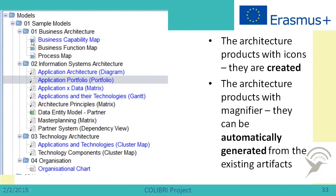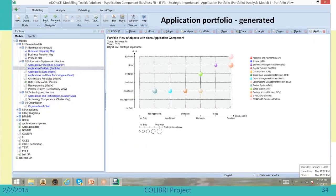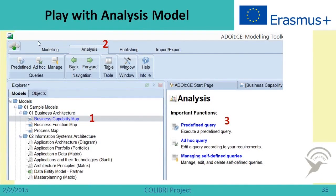In the palette, you can see that some models have icons and some have just magnifiers. Those with icons are created by the person who uses the tool. However, those with magnifiers are already generated by the tool. So we can see that this is already an advanced and very useful tool because it gives the opportunity not only to represent the model but also to analyze it. For example, there is an application portfolio diagram which is automatically generated by the tool.